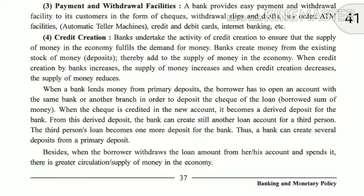When the check is credited in the new account — the loan account opened by Mr. X in SBI Bank — that amount comes into his bank account. It becomes a derived deposit for the bank. Even though the bank is giving a loan, that loan comes into a customer's account within the bank. From this derived deposit, the bank can create still another loan account for a third person, from that same amount.